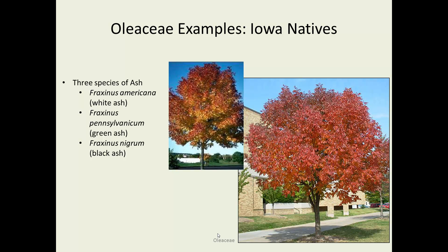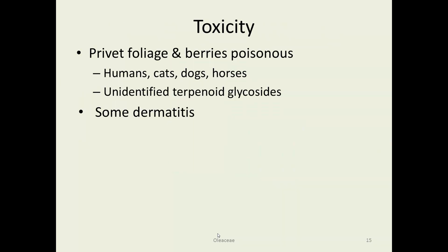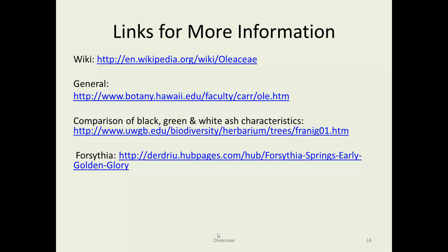Black ash is more likely to be found on the east side of the state. There is not much toxicity in this family — privet can cause some intestinal issues, and there is some dermatitis caused by members of the family, but nothing like some families that seem to be sprinkled with poisons. For more information, see Wikipedia, the University of Hawaii, and for identifying black, green, and white ash, there is an excellent website at the University of Wisconsin. Additional information on forsythia is available at the bottom link.